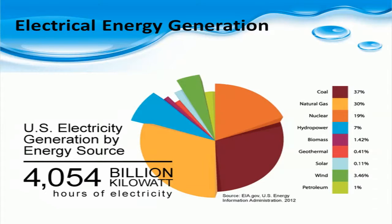This graph shows how the U.S. produces most of its electrical energy. Fossil fuels, such as coal and natural gas, make up most of our usable electrical energy at roughly 67%. The rest of our energy comes mostly from nuclear energy at 19%, while the remaining percent is made up of renewable energy sources, of which hydropower at 7% dominates over the others.